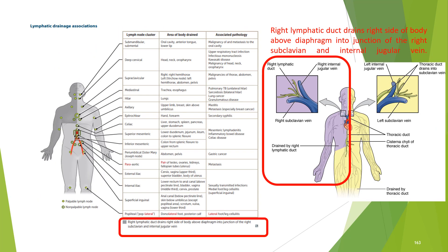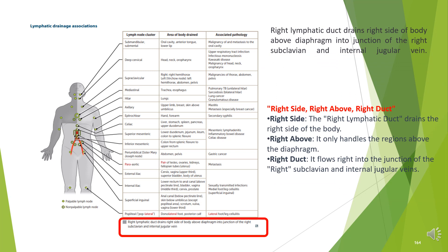Very important note: the right lymphatic duct drains the right side of the body above the diaphragm into the junction of the right subclavian and internal jugular vein. Remember: right side — it drains the right side of the body; right above — it only handles regions above the diaphragm; right duct — it flows right into the junction of the right subclavian and internal jugular veins.